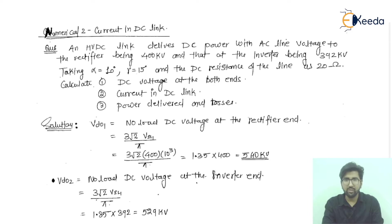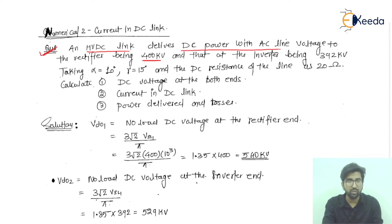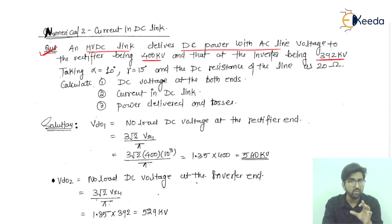We will start with reading this numerical. It is saying that in the HVDC link, we have given an HVDC link which is delivering DC power. The voltage at the rectifier end is 400 kilovolts and the voltage at the inverter end is 392 kilovolts.